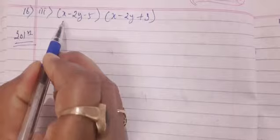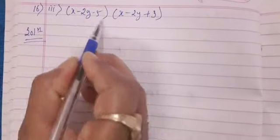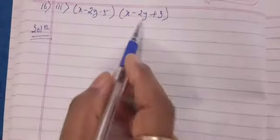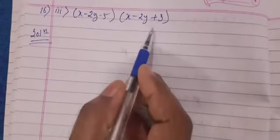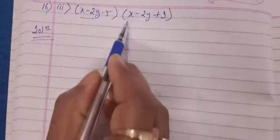See, in our question it is given that (x - 2y - 5)(x - 2y + 3), we have to find out its value. See, first two terms with sign they are same and last two terms, even signs are also different.